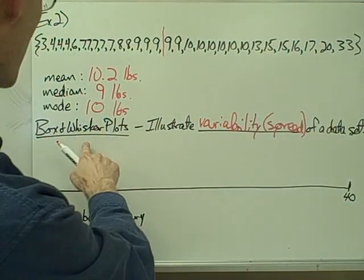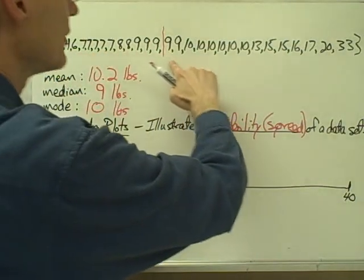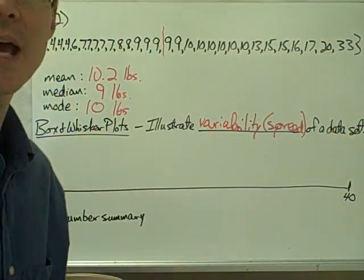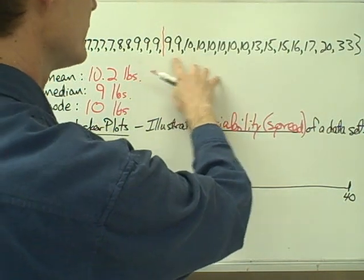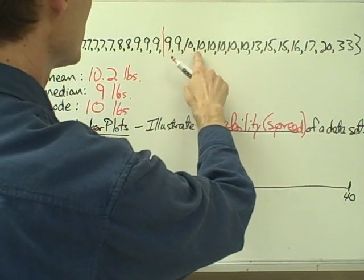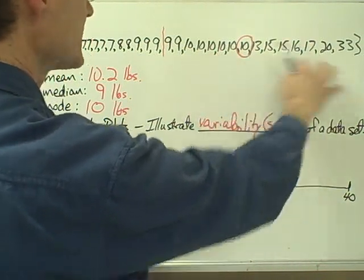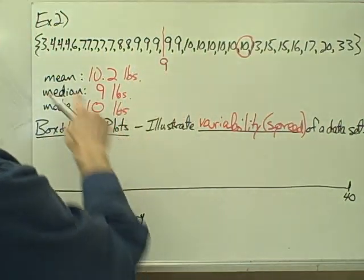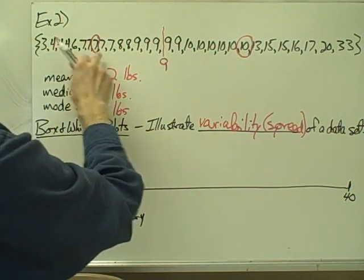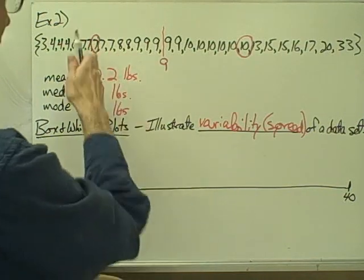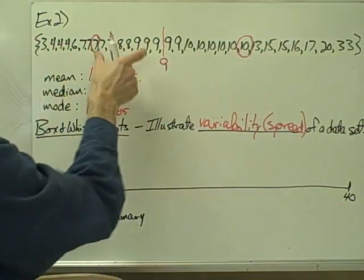To draw a box and whisker plot, now that we've found the median of our data set, I want to find the median of the top half and the median of the bottom half. For the top half, I have 15 values, and counting to the 8th gives me the median of the upper half. For the lower half, similarly the 8th data point is the median of the lower half. So I have three points that divide my data set into four sections.